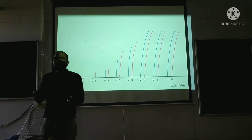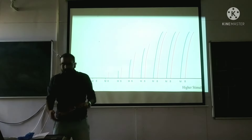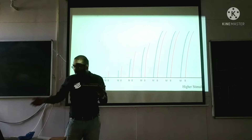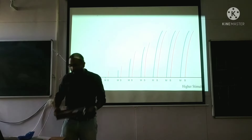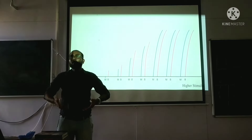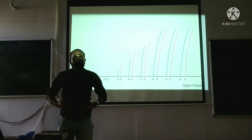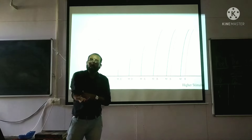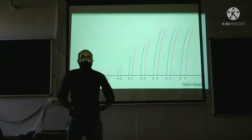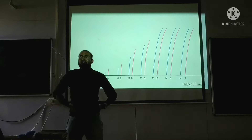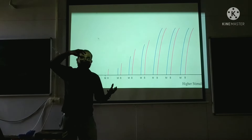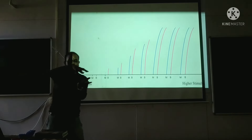Whenever you are picking up something — if I have one book, then two books, then a laptop — how is your muscle managing the increasing weight? It is because of the strength of stimulus and recruitment of motor units. Up to about 40-50 kg, all of your motor units are recruited. I will show you the diagram of how a nerve fiber supplies muscle fibers and how many units are recruited.